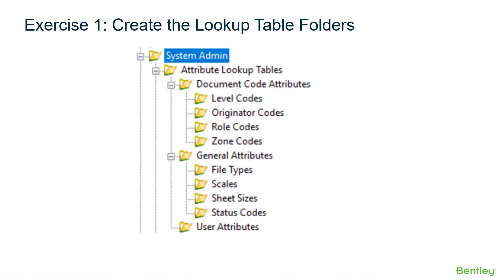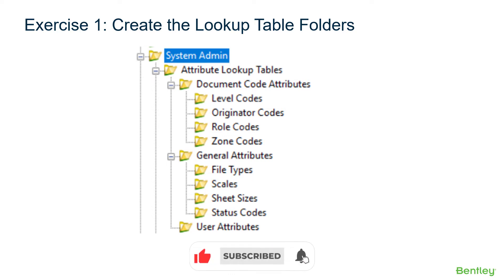In our first exercise, we will create the following folder tree under System Admin in ProjectWise Explorer. This is the parent secure folder where only administrators and selected non-administrator users can populate the data. Standard users in the data source will only need read access to the abstract documents for the attributes to present the lookup values during data entry. The parent folder containing the lookup tables can be located anywhere within the data source. For this course, we will be storing all the lookup tables under System Admin in a folder called Attribute Lookup Tables.